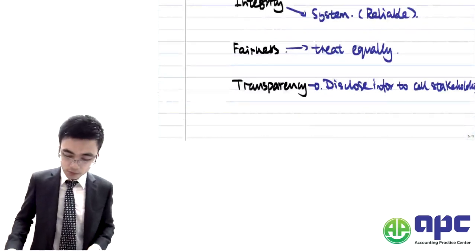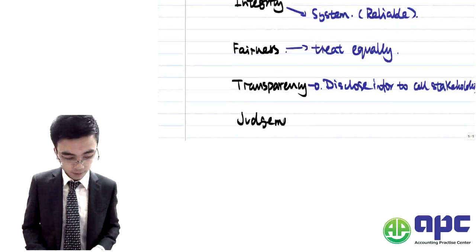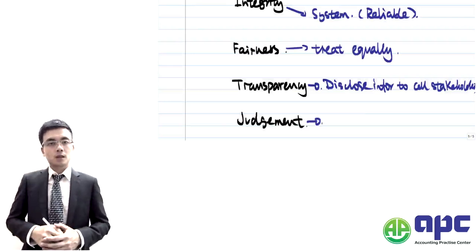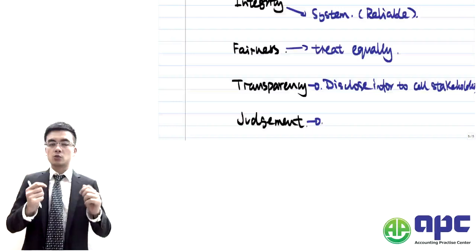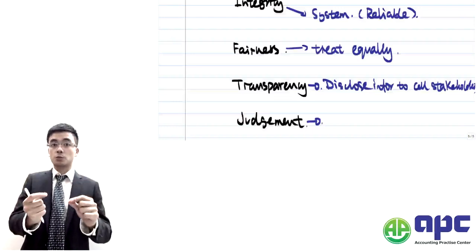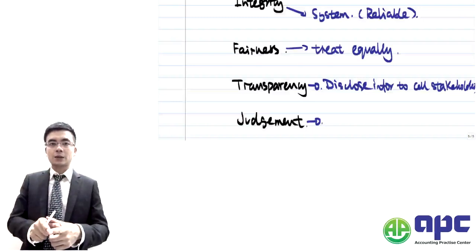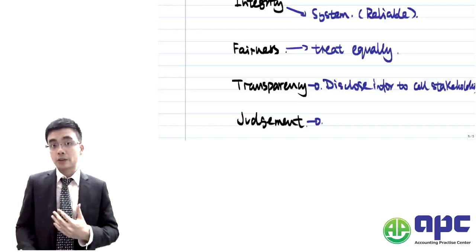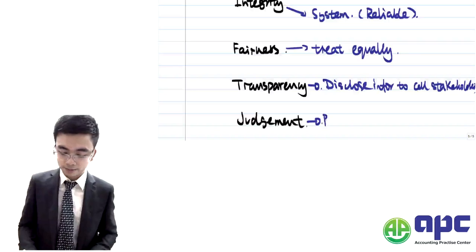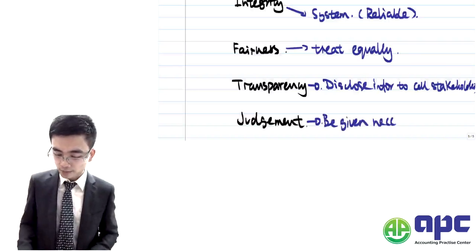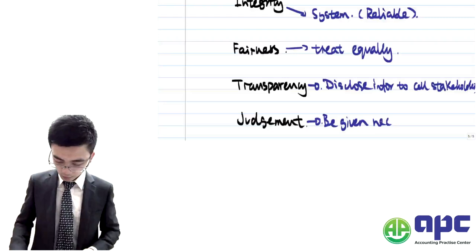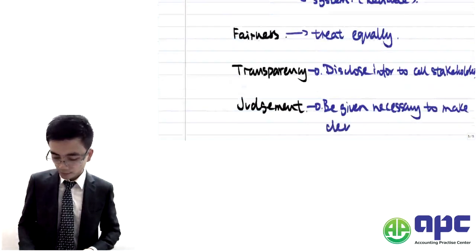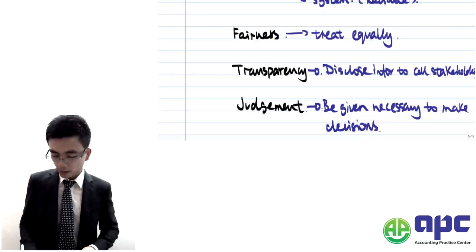The fourth fundamental principle is judgment. As directors, we build systems for the company to make money for shareholders and generate information from those systems. Judgment means that from a director's perspective, we should have been given the necessary information to make decisions.